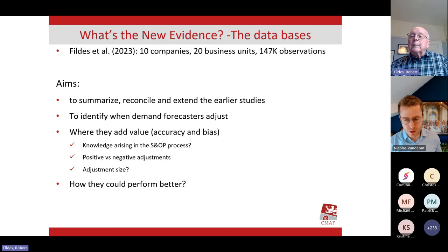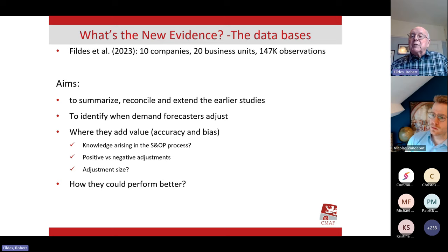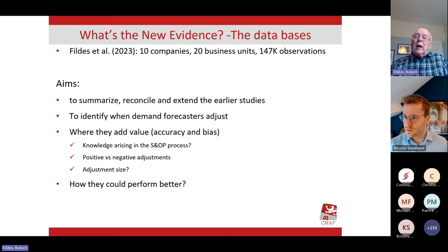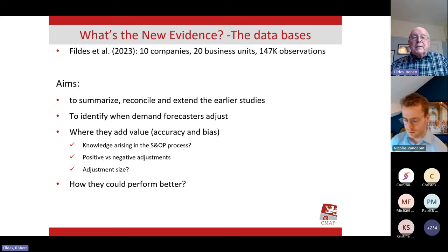We now know, confirmed by the most recent evidence, that negative adjustments — where people receive negative information — are much more valuable and much less dangerous than positive adjustments. People make positive adjustments saying, 'We've got the latest promotion happening — it can't fail,' and they over-adjust. So the key question remains: how could we make it all work better?